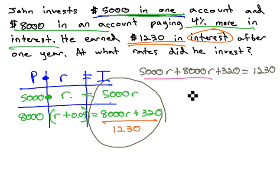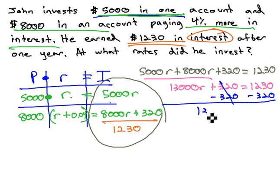We can start solving by combining like terms to get 13,000R plus 320 equals 1,230. Subtract 320 from both sides to get 13,000R equals 410.